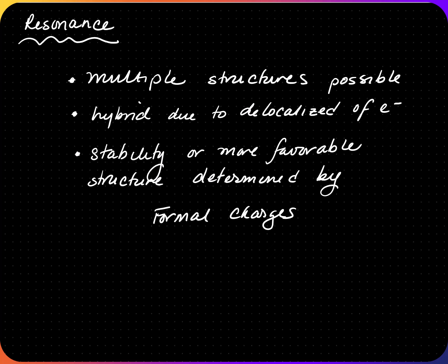Resonance. Lewis dot structures may have more than one possible structure. This is because of hybridization due to delocalization of electrons, so the electrons can bond to more than one atom. Stability or the more favorable structure is determined by formal charges.